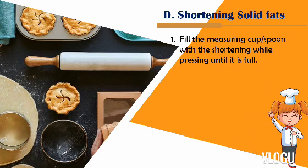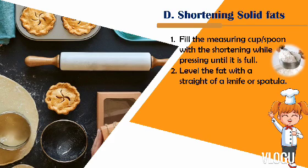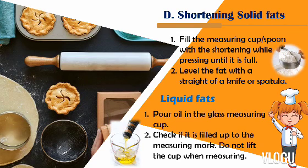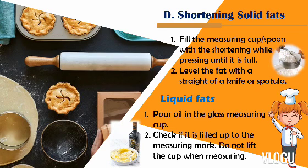For shortening or solid fats: first, fill the measuring cup or spoon with the shortening while pressing until it is full. Second, level the fat with the straight edge of a knife or spatula. For liquid fats: first, pour the oil into the glass measuring cup. Second, check if it is filled up to the measuring mark. Do not lift the cup when measuring.